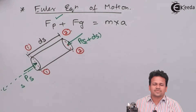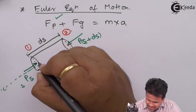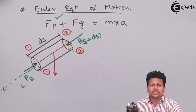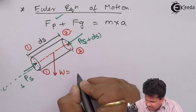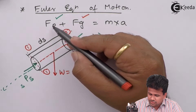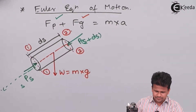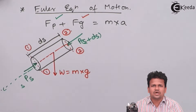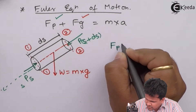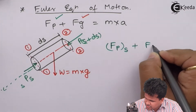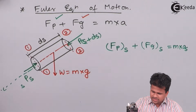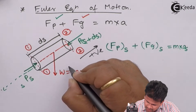Now let us consider what is the gravitational force acting on the fluid. Let us consider the center line, and at the centroid, this will be the weight of the fluid which is actually going downwards. This weight of the fluid will be equals to mass into gravitational acceleration. We have now written all the possible forces — force due to pressure and force due to gravity — which equal mass into acceleration along that direction.